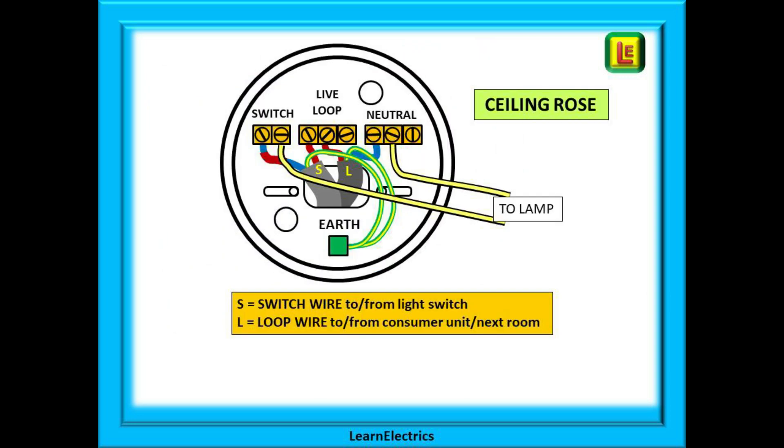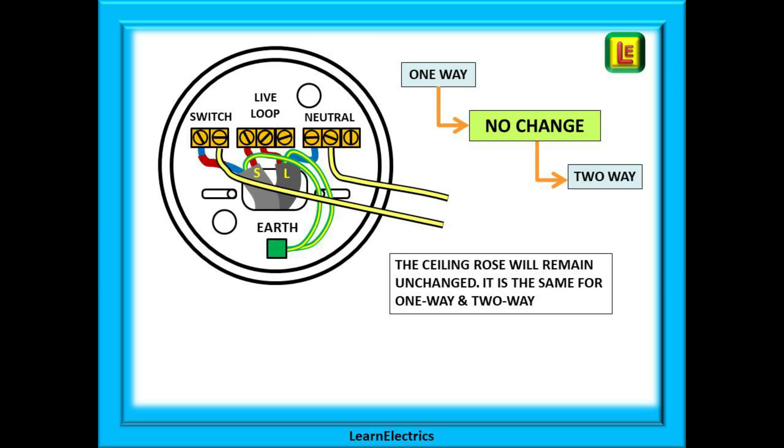We will use a standard three plate ceiling rose in this example and how to wire this up is fully detailed in the one-way lighting video. Marked S here is the switch wire to and from the light switch, and marked L is the loop feed from either the consumer unit or the previous ceiling rose. The ceiling rose will remain unchanged. It is the same configuration for one-way and two-way lighting. This means that if you change a one-way lighting circuit to two-way, there is nothing to do at the ceiling rose. It is all done at the switches.